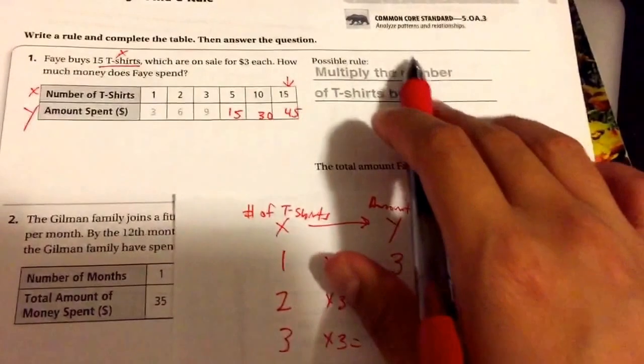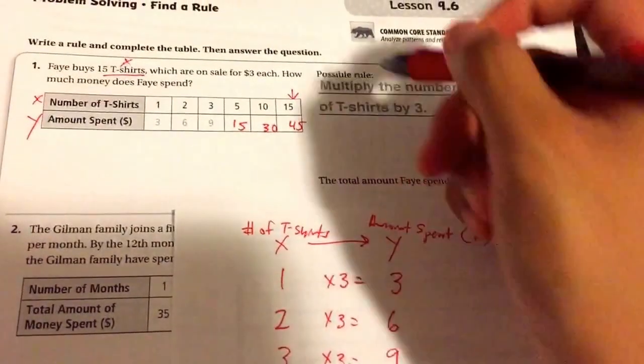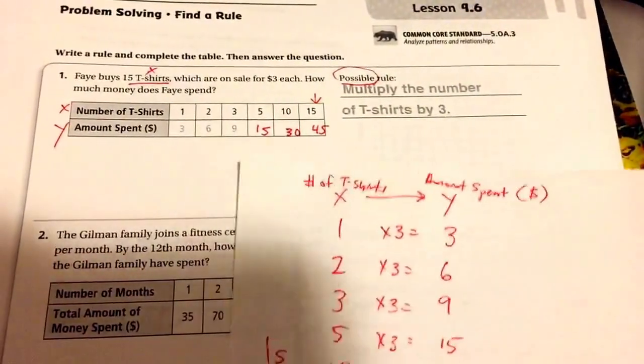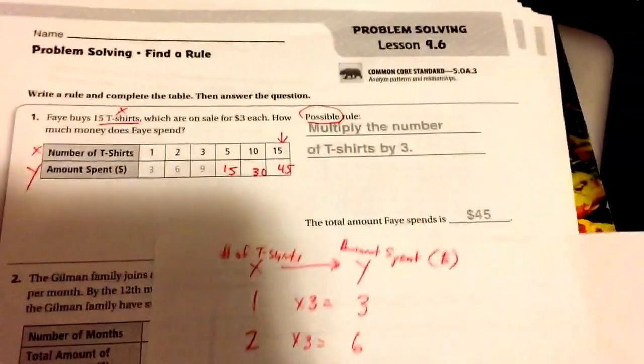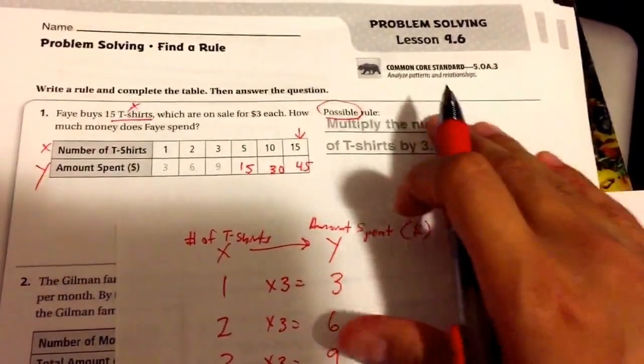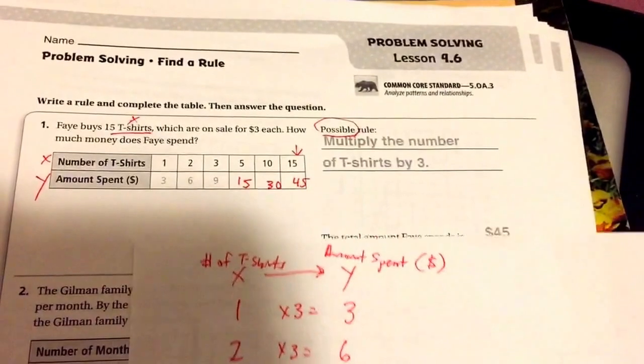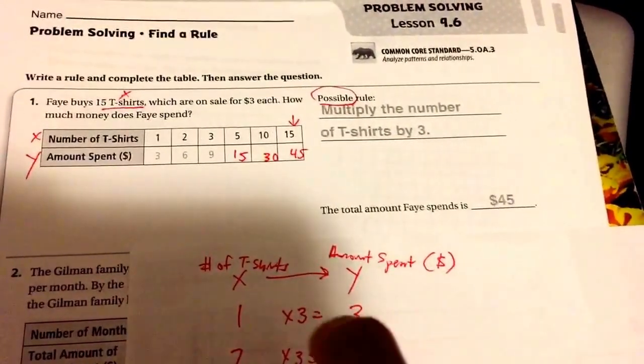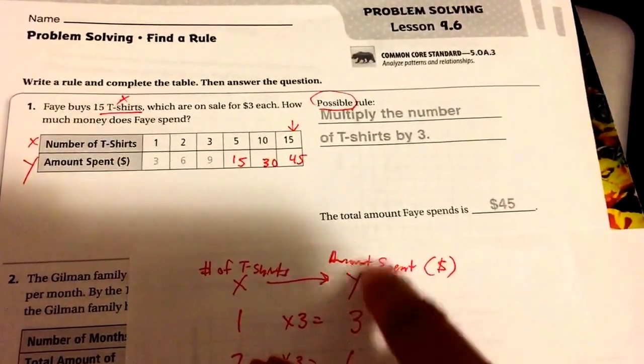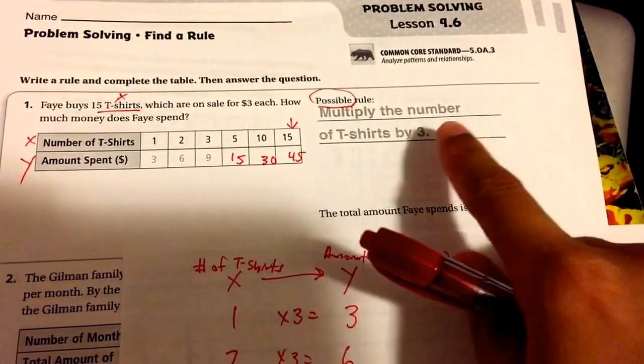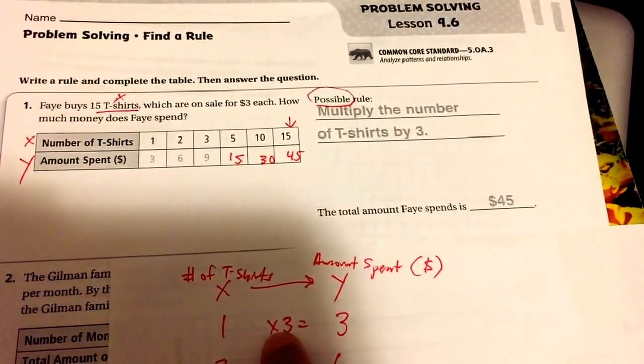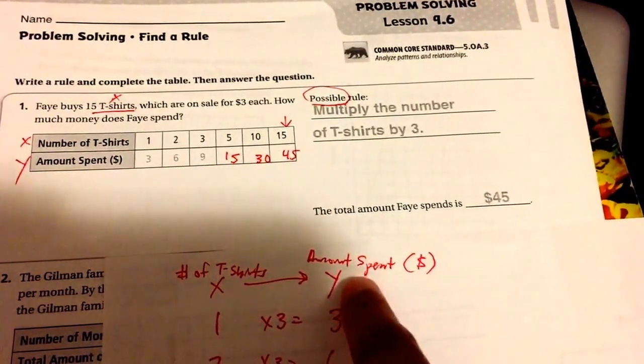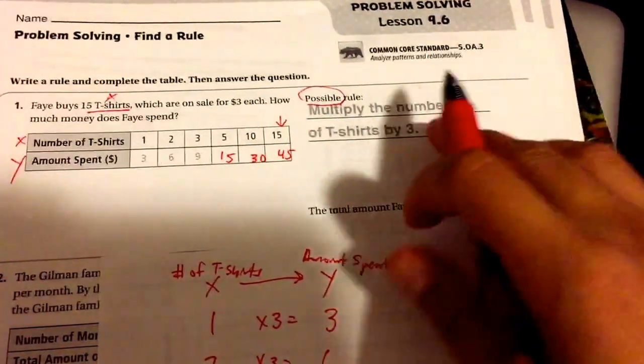But when they ask for the rule, the reason why they say 'possible rule' is that I'm going to show you how to do two sentence frames. In essence, I don't actually love their answer, and so we're going to make one that's more specific than theirs. There are two different rules that you can come up with: you could either go from your X to your Y, or from your Y to X. Now they went from X to the Y. What you would do is you multiply the number of t-shirts by three to find the amount spent.